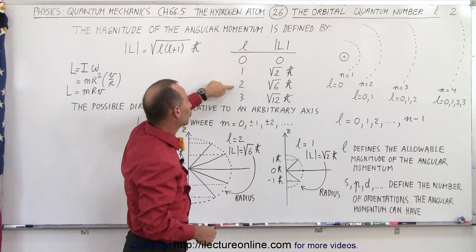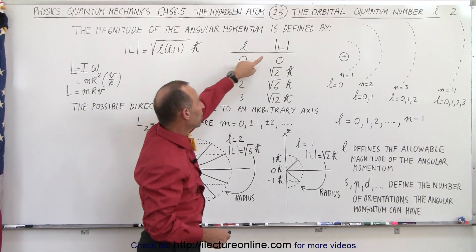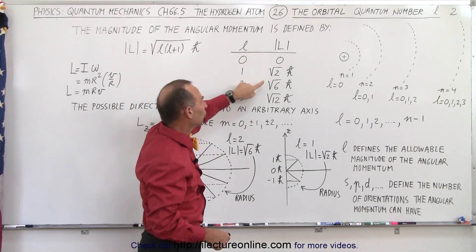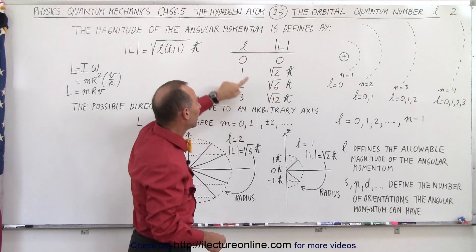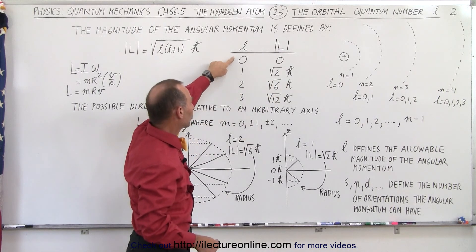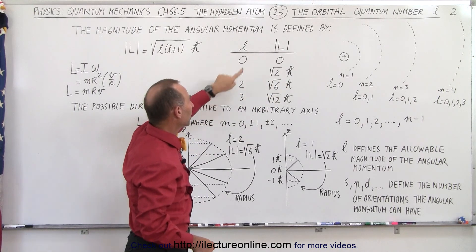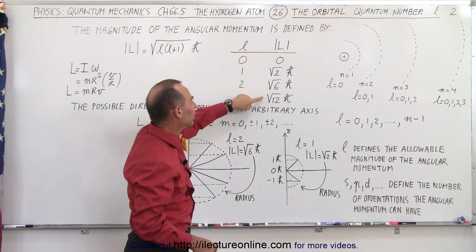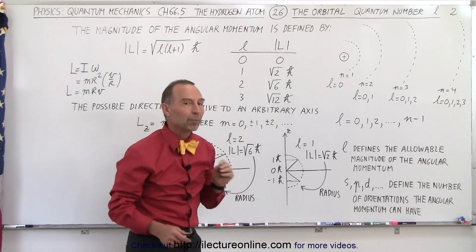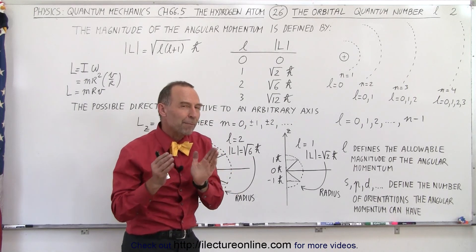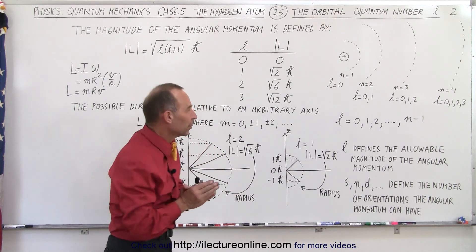When L equals 2, the angular momentum is going to be the square root of 6 times H-bar. And when L equals 3, the magnitude is going to be the square root of 12 times H-bar. So that's the magnitude of the angular momentum.